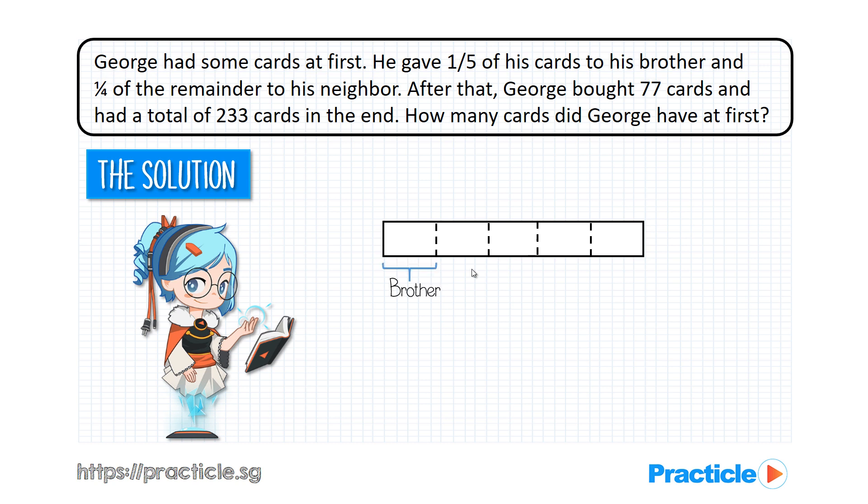So far so good? Now, what else do we know? After giving his cards to his brother, he actually gave 1 quarter of the remainder to his neighbour. So here, we need to take note of the phrase 'of the remainder'. And this is actually a test as to whether we know the remainder concept. So we have to be careful that this 1 quarter refers to the remainder instead of the total number of cards.